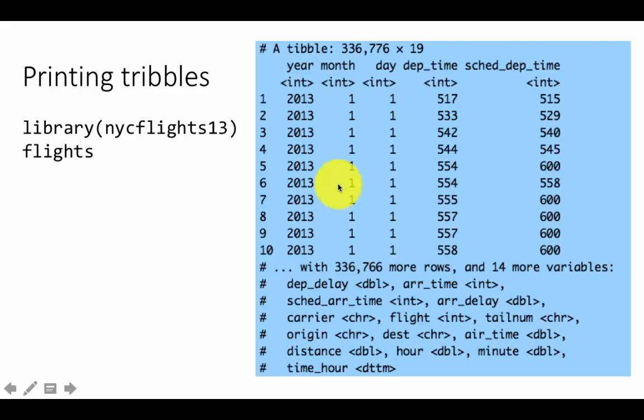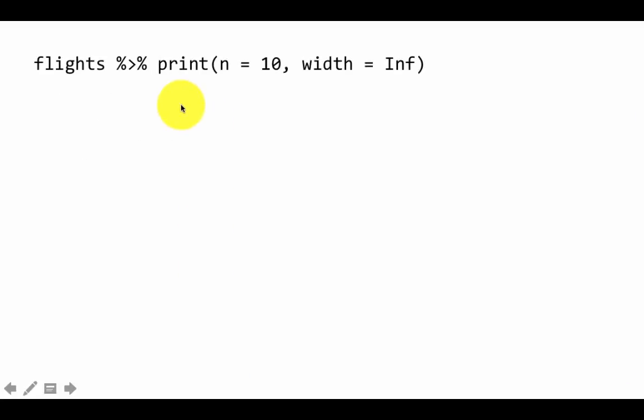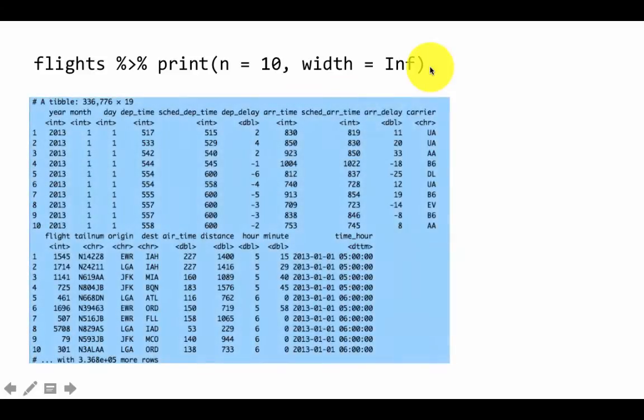If for any reason you wanted to print all the columns for the 10 rows, you can do that by using this notation. We are using the pipe here. We are saying flights pipe print, n equals 10, width equals inf. If you say width equals inf, it treats the width as if it is infinity and then prints all the columns. If you use a pipe, you are saying take the results of the prior expression and feed it in as the first argument to the next expression. This is equivalent to print flights, comma, n equals 10, width equals inf. Then you see the result—it printed 10 rows but did not stop with printing the number of columns that would fit; instead it continued to print the remaining columns as well.